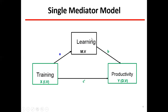For example, consider productivity. Training is being given about a machine, software, or sales. That increases the participants' learning. When learning increases — they learn the work — then productivity increases. So we say: training affects learning, and learning affects productivity. Therefore learning becomes the mediator. Training does not directly affect productivity; rather, before affecting it, another process occurs — the participants' learning increases, and because of that learning, since they have learned the work, they perform better. That is what we call productivity.